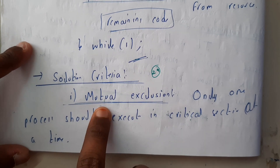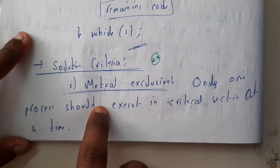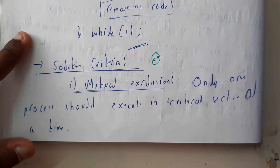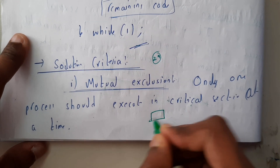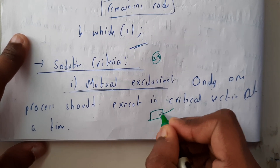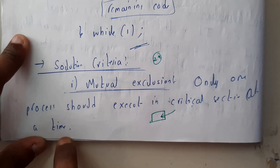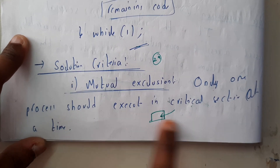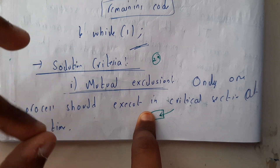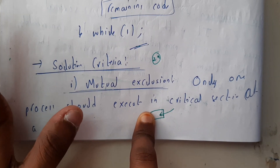The first rule is mutual exclusion. Mutual exclusion means that at a single moment of time, only one process should access the critical section — only one process should execute the critical section at a time. These are really important words to notice.